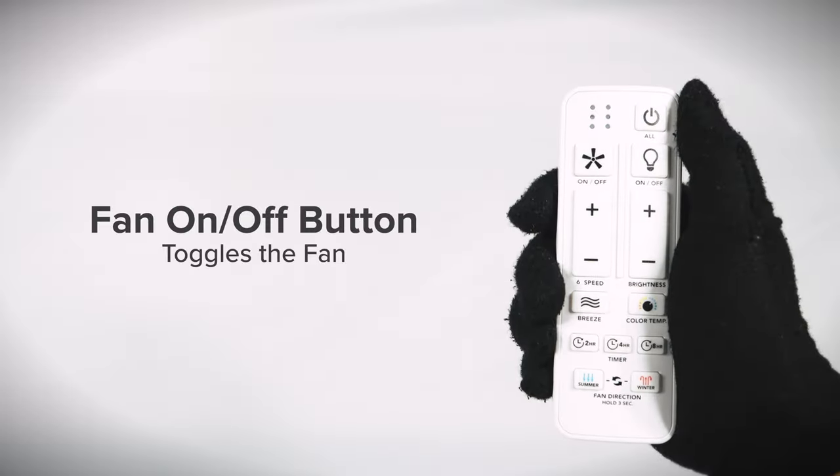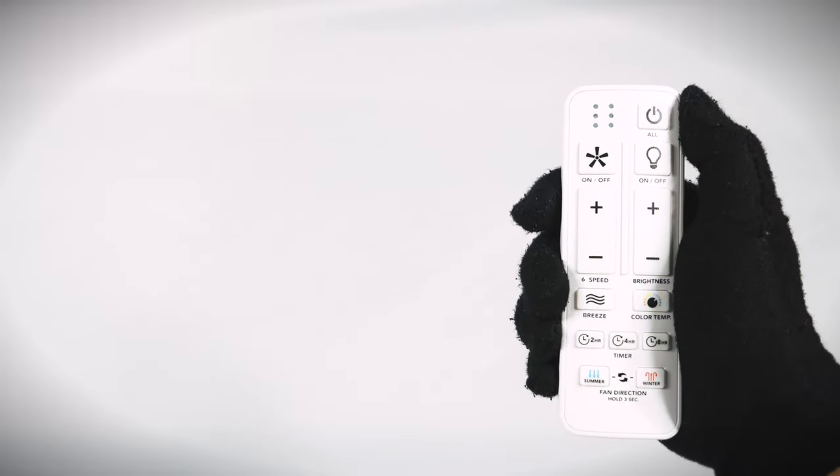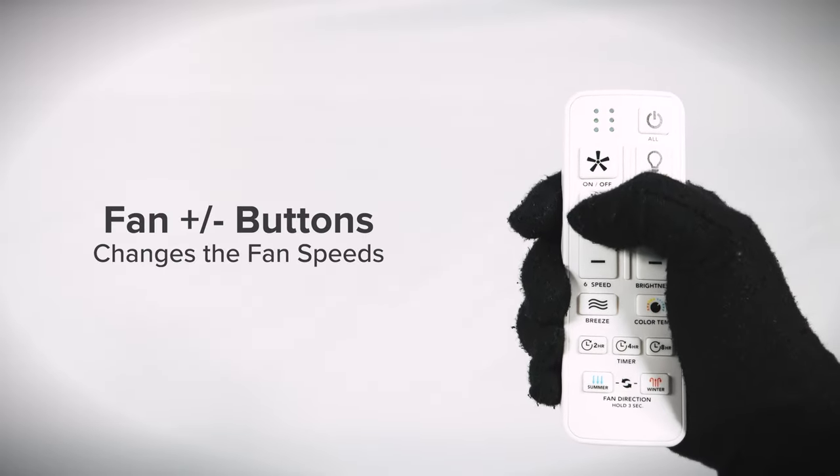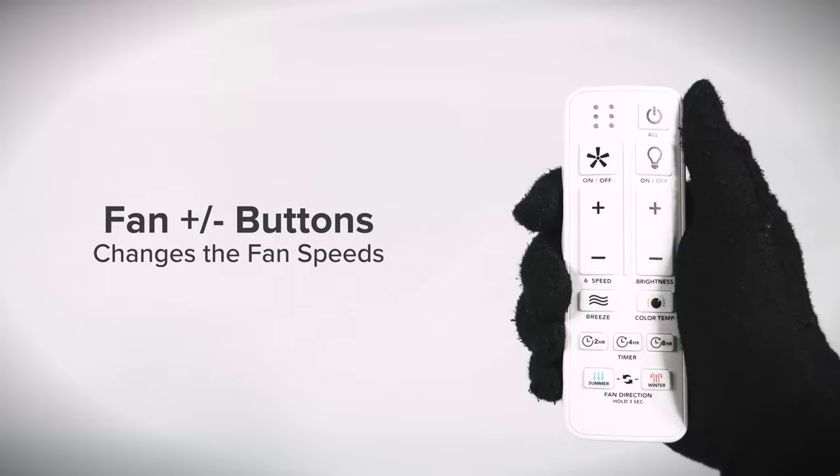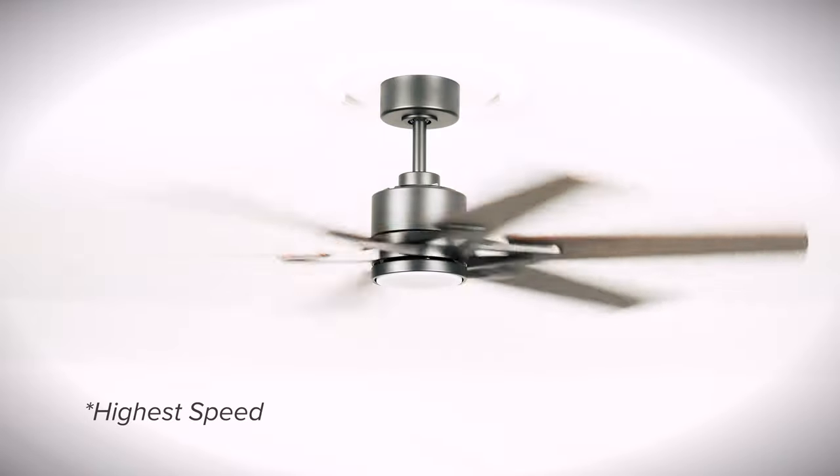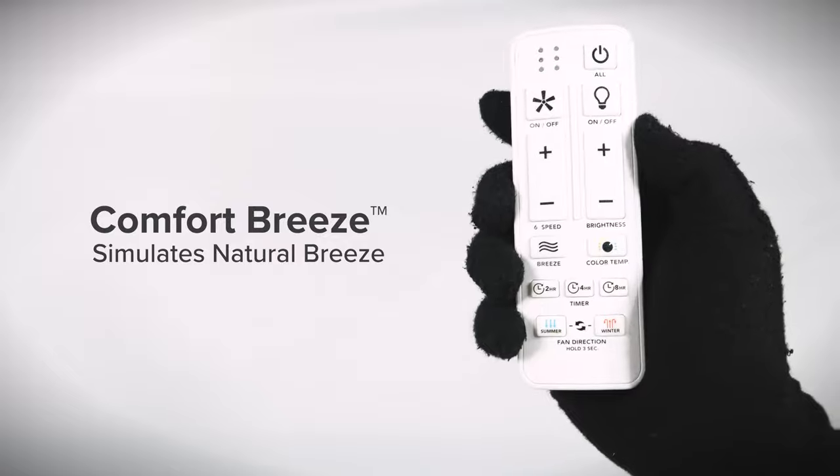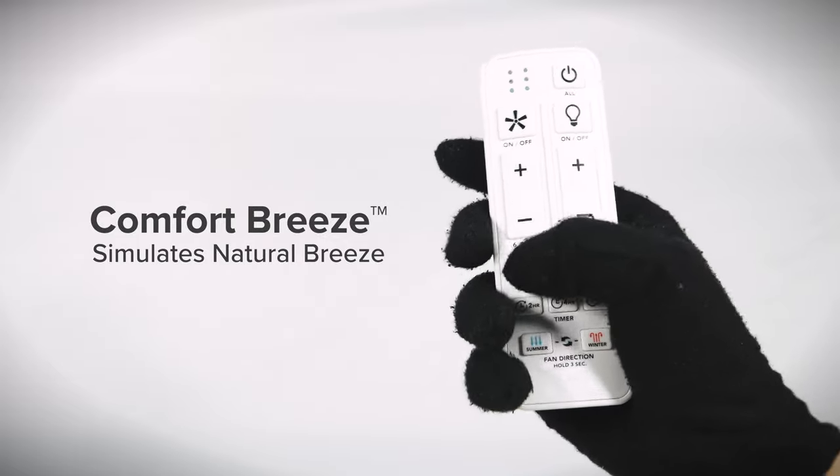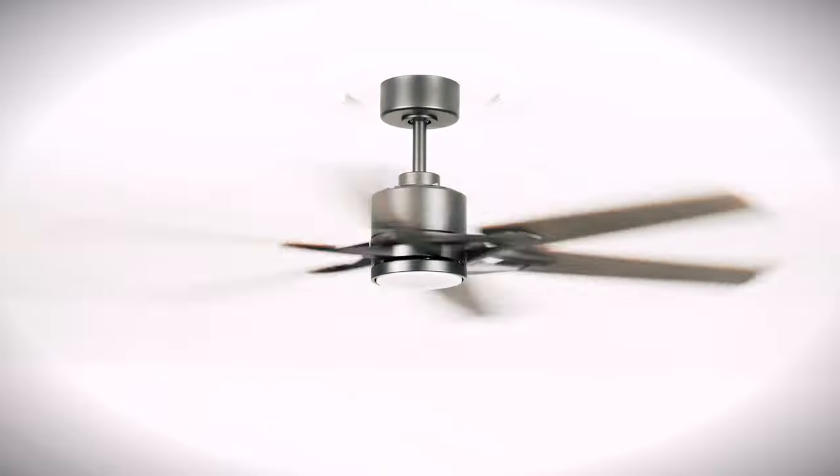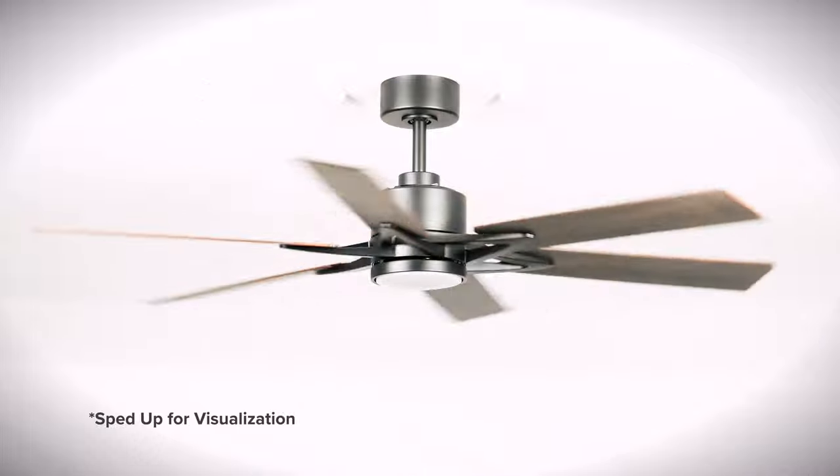Press the fan on off button to toggle just the fan. Press the fan plus or minus buttons to increase or decrease the fan speed. Press the comfort breeze button to toggle comfort breeze mode, a feature that produces a natural feeling breeze by alternating between lower and higher speeds.